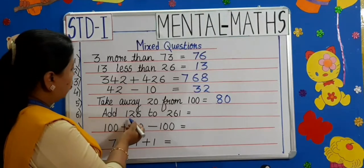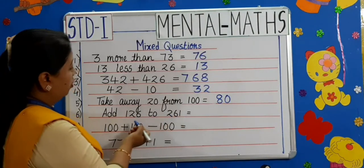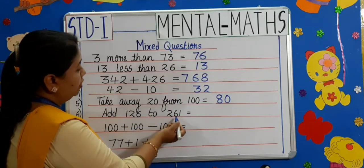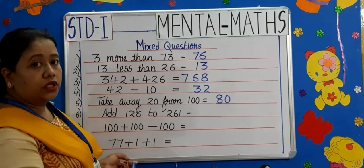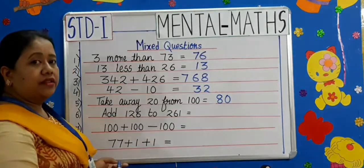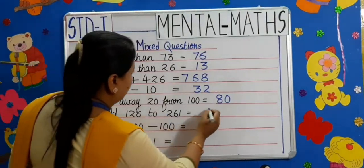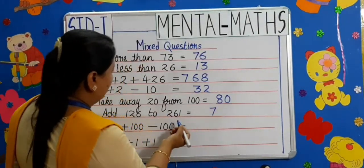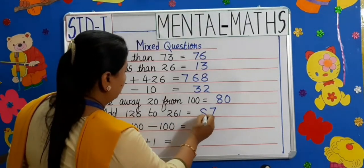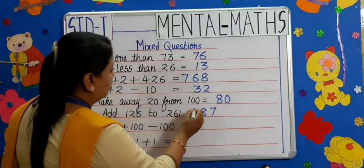Moving on to the sixth one: add 126 to 261. What we have to do? We have to do addition. Let's do ones first. 1 plus 6 is 7, 6 plus 2 is 8, 2 plus 1 is 3. The answer is 387.